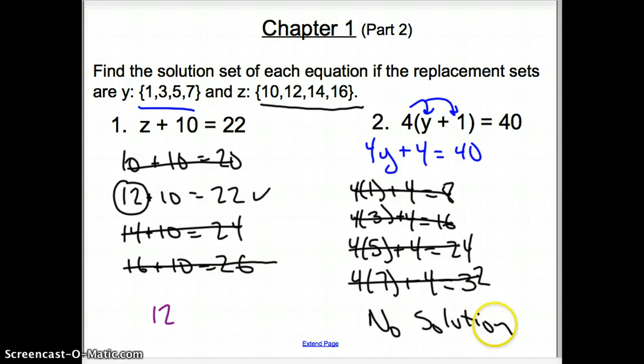So then we say that there is no solution. So you can write it out like that. Or you can put a zero with a line through it, meaning no solution.